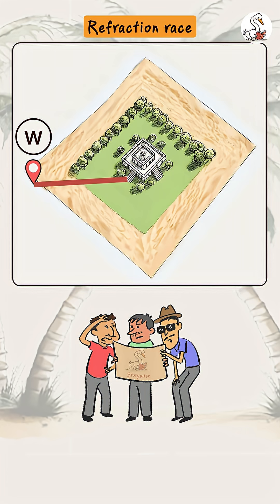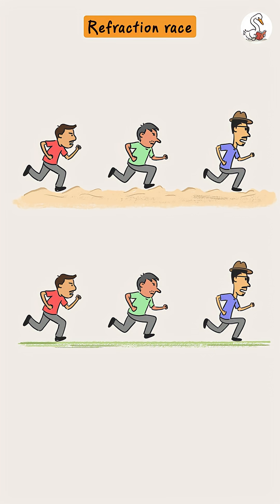Now, whoever reached the treasure first would get to claim it. All three competitors had the same running speed on both sand and ground. However, their speed on the solid ground was faster than on sand.